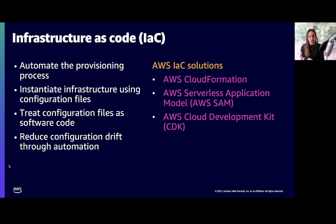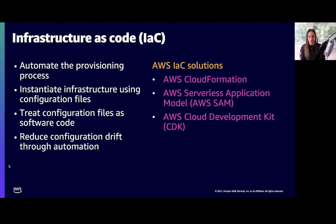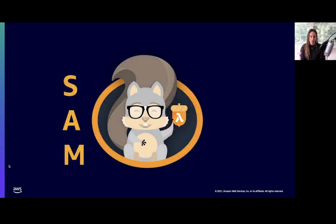At AWS, we have several infrastructure as code solutions. The primary one is AWS CloudFormation; a lot of the others are built on top of that. The one we'll mostly talk about today is the AWS Serverless Application Model, or SAM. There's also the AWS Cloud Development Kit, or CDK, which allows you to write a bit more code. So you do have a lot of options here. One of the infrastructure as code tools AWS provides is called SAM — the Serverless Application Model. This little guy is Sam the Squirrel, he's the SAM mascot.